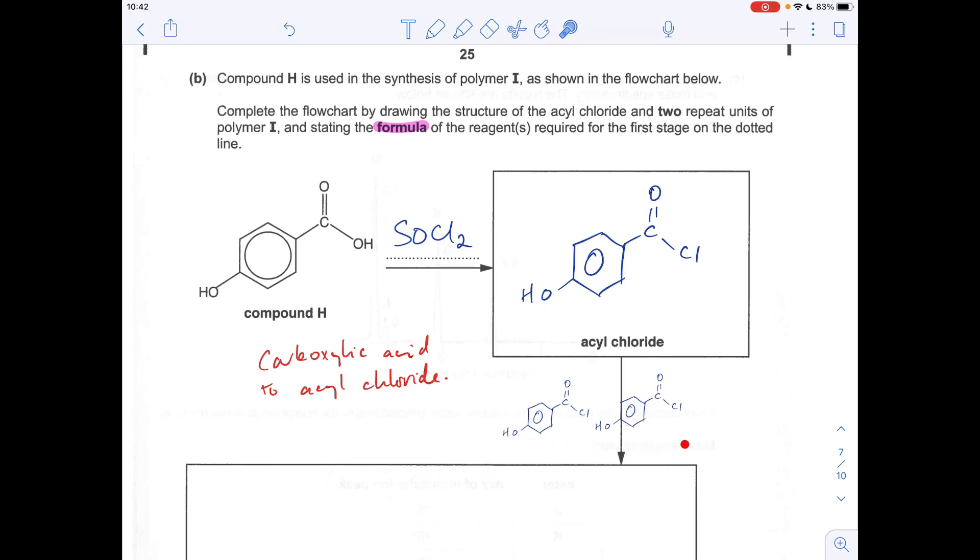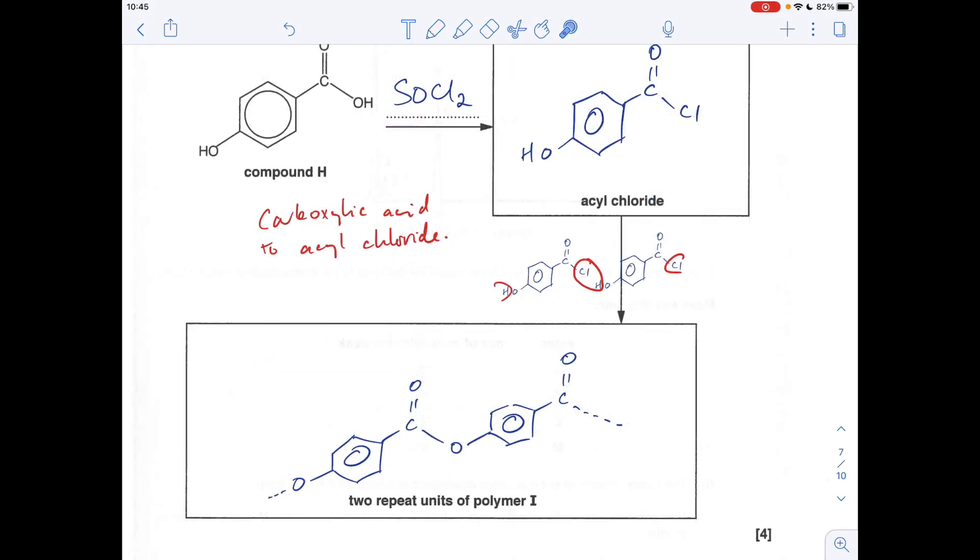So I've put two monomers up there because we've got to draw two repeat units. So I just lasso out the key parts and then join what's left together. And that's going to be our two repeat units. So there's the two repeat units there. Just be careful with your end bonds.